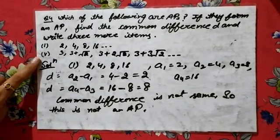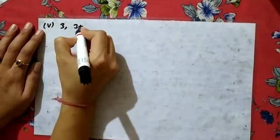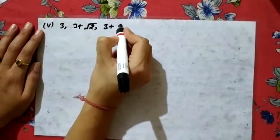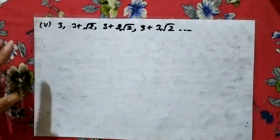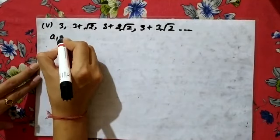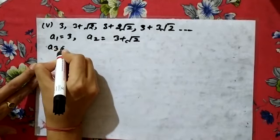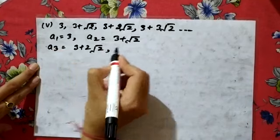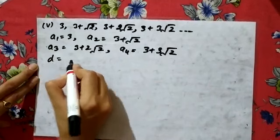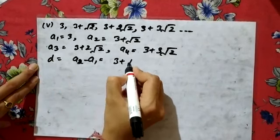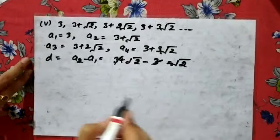Similarly, I will tell you how to do this. 3, 3 plus root 2, 3 plus 2 root 2, 3 plus 3 root 2 like this. Here A1 is 3, A2 is 3 plus under root 2, A3 is 3 plus 2 root 2, A4 is 3 plus 3 root 2. D equals A2 minus A1, which is 3 plus under root 2 minus 3. Cancel, this term is under root 2.